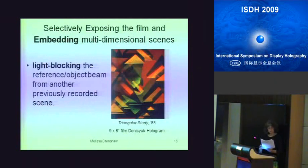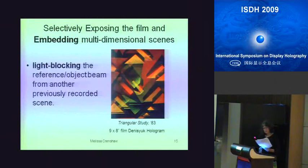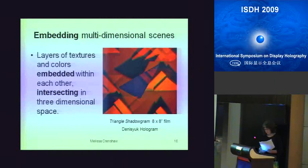The palette of possibilities was extended by recording one scene in the space left by light-blocking the reference object beam from another previously recorded scene. This simple technical approach allowed layers of textures and colors to be embedded within each other or intersect in three-dimensional space in a way that was not physically possible. Shadow forms and pseudoscopic elements in the reflection film hologram study are examples of this exploration. These holograms were created in 1983, and they're just little film holograms, about 8 by 10.